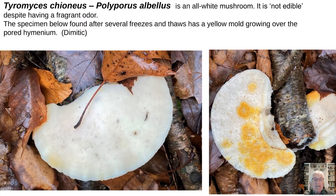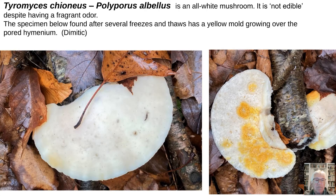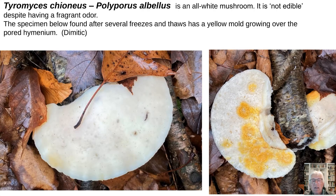Here's Tyromyces chioneus, the cheese mushroom — it used to be called Polyporus albellus. It's not edible, even though it has a very fragrant, sweet odor. This one here has a yellow mold growing on it — a Sepedonium stage of Hypomyces. The Hypomyces will have a white, yellow, and a red stage; this is the intermediate yellow stage. You can squeeze a lot of water out of it — sometimes people will squeeze the water out and wash their hands with it since it smells good, but it's not edible.